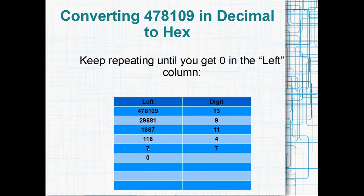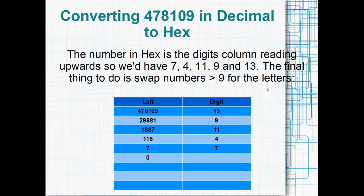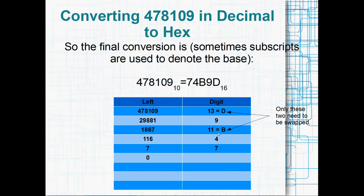Repeating again, we get 7 remainder 4. So 116 divided by 16 gives you 7 remainder 4. We put the 7 in the left column and the 4 in the digits column. Finally, when we repeat once more, 7 divided by 16 is 0. So we put the remainder, which is 7, in the digits column and the 0 in the left column. And when we get to 0 in the left column, we know that we're done. So that is almost our number. There is one extra step when converting to hexadecimal. And that is that we've got to swap the digits that are greater than 9 for their letters. So there was two digits there that were greater than 9. The 11 becomes a B and the 13 becomes a D. And our final answer is that 478,109 in decimal equals 74B9D in hexadecimal. Easy as that.